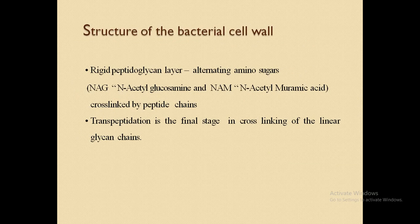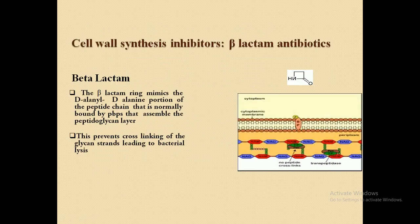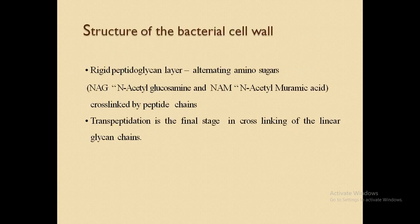To review the structure of the bacterial cell wall: it contains rigid peptidoglycan with alternating amino sugars — N-acetylglucosamine and N-acetylmuramic acid — cross-linked by peptide chains. Transpeptidation is the final stage of cross-linkage of the linear glycan chains. In the next class we will discuss cell wall synthesis inhibitors, also known as beta-lactam antibiotics, in more detail. Thank you for watching.